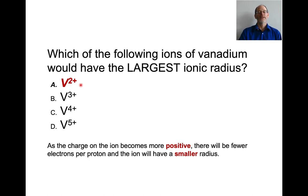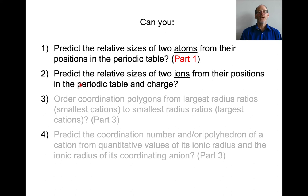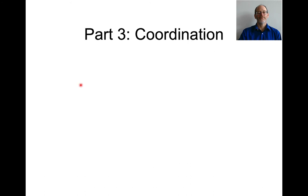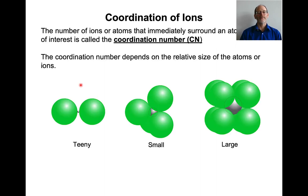Vanadium plus two has the largest ionic radius; vanadium plus five has the smallest. You should now be able to predict relative sizes of two ions based on their charge and position in the periodic table. Coordination is how ions pack together. The number of ions that can pack around an atom is called the coordination number — it can be 2, 3, 4, 6, 8, and so on — and it depends on the relative sizes of the atoms.